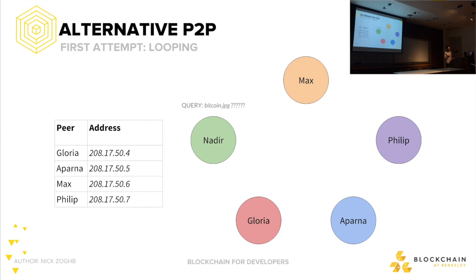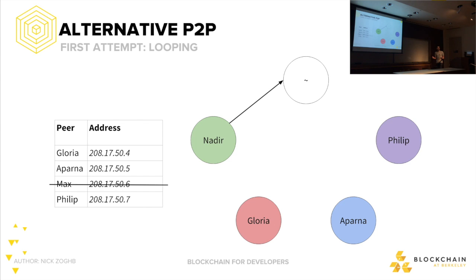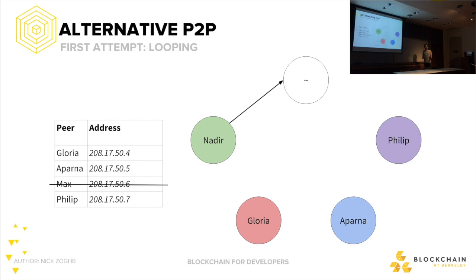Nadir is still looking for Bitcoin.jpg. He makes a query to Max. But maybe on day zero Nadir got the list, and he makes a query on day 20 — Max is no longer at that address. That node just disappeared. Because you're an asynchronous decentralized system, you have no way of knowing where your other peers are in the interim, because this is the only list you have.